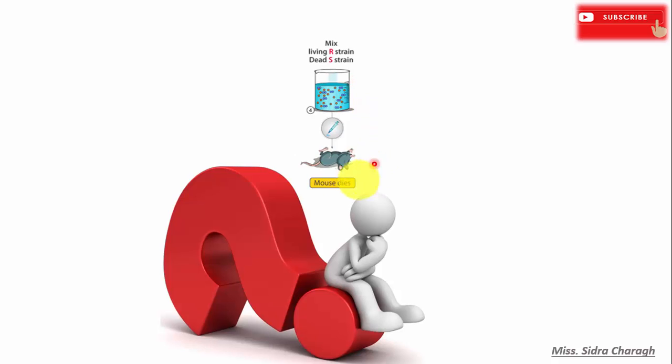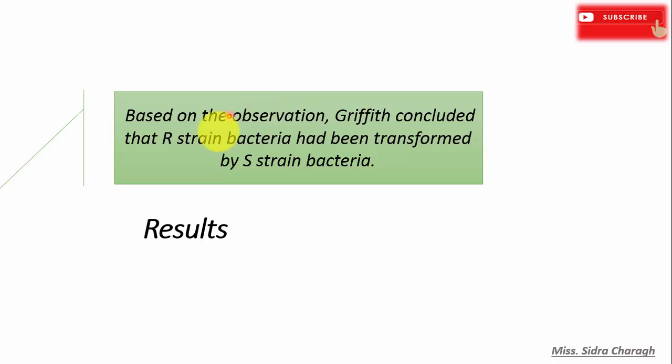This means that something transferred from heat-killed S strain to live R strain cells, which converted the live R strain bacteria to S strain bacteria that were highly pathogenic. This phenomenon was known as the transforming principle.